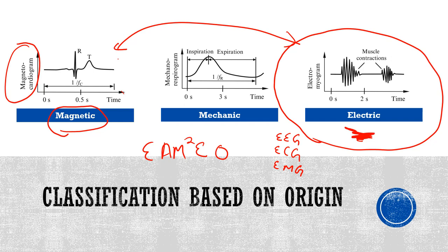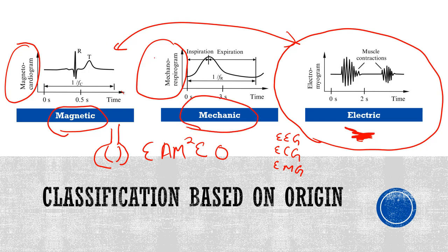Mechanical biosignals are mechanic in nature. The mechanorespirogram is one example — the lungs expand and shrink when you breathe in or breathe out, showing a respiratory cycle. Those signals represent the mechanical movement of the lungs and since the origin is mechanical, we call them mechanic biosignals.